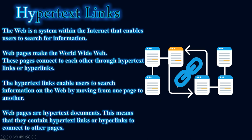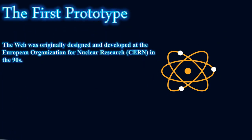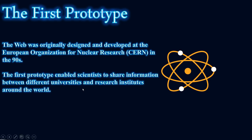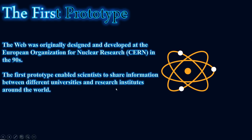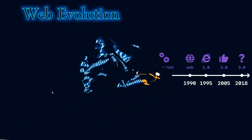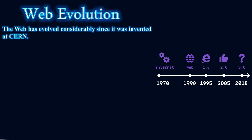The web was originally designed and developed at the European Organization for Nuclear Research (CERN). The first prototype enabled scientists to share information between different universities and research institutes around the world.